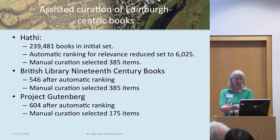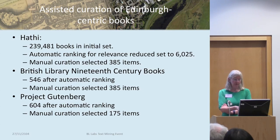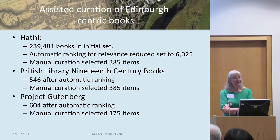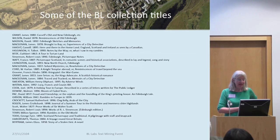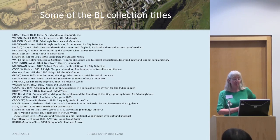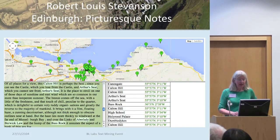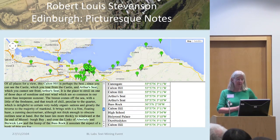At the moment we've got 385 books from Hathi. From the British Library collection we have fewer than 546. From Gutenberg we have 175. So we're taking very big collections and shrinking them down to the ones we want. These are some of the titles that have been deemed Edinburgh-centric from the British Library collection. And here's a quick visualisation of a tiny bit of Stevenson's picturesque notes, where you can see that we found place names and located them on a map.